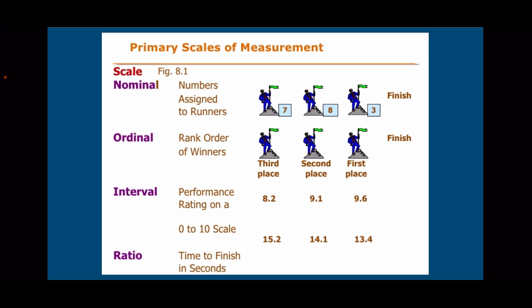In the given example, the ratio refers to the seconds in which the runner finished the race. When you say a runner got 0 seconds to finish the race, it means the runner does not exist — or it is not merely referring to poor performance or meaning the runner was so fast they finished in 0 seconds, which is very impossible. So in ratio, there is an absolute zero.